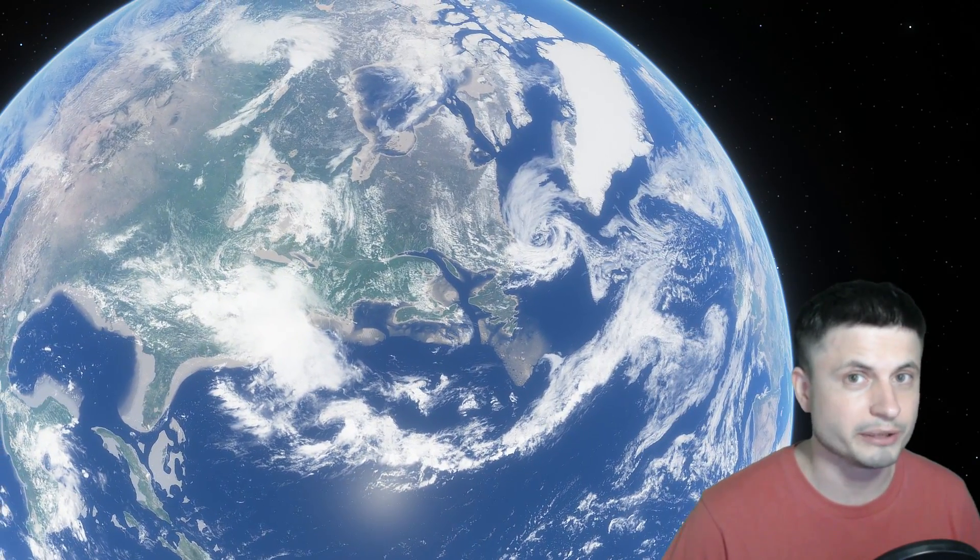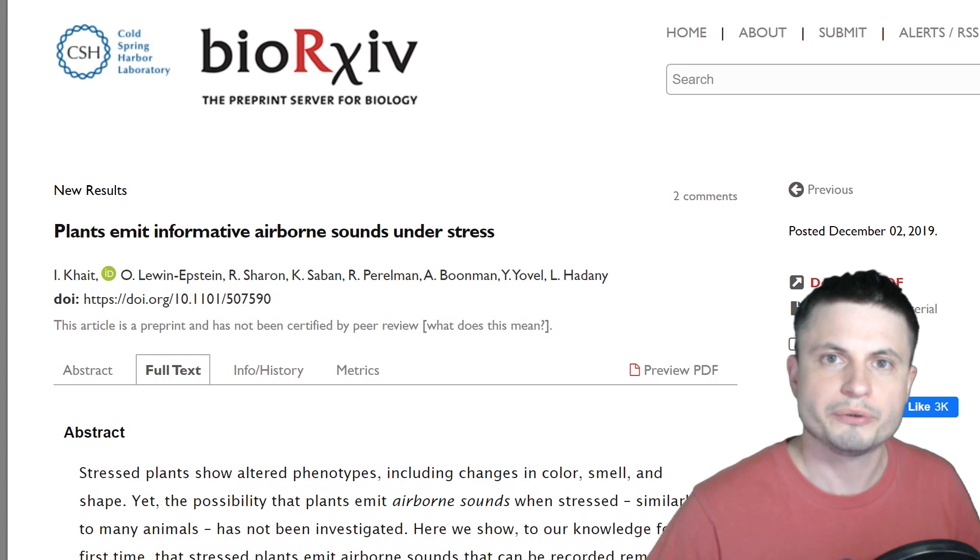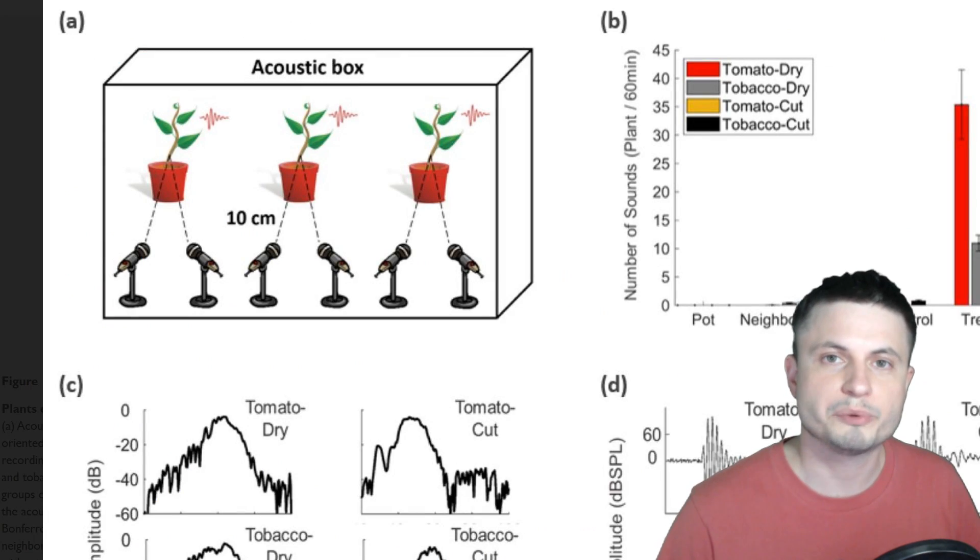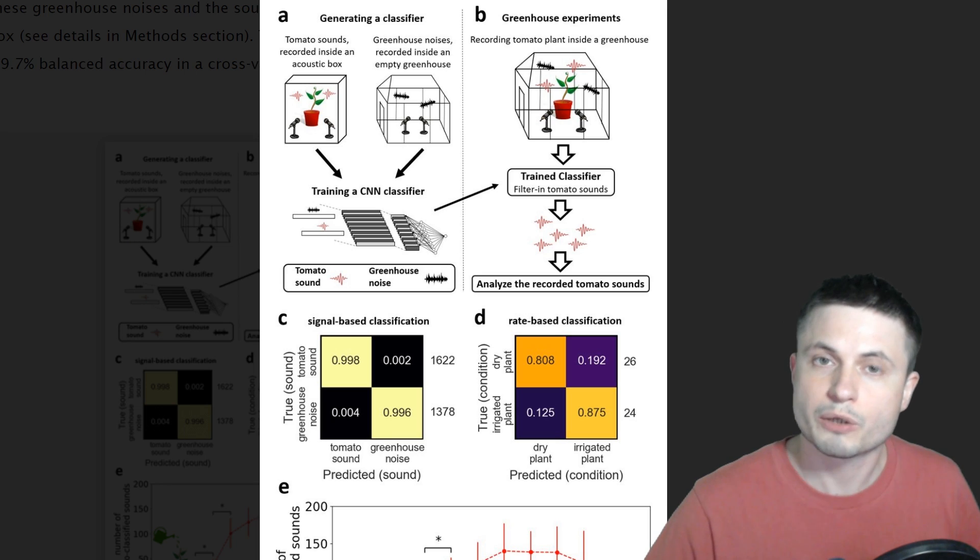Now you can probably already tell from the title what it's about, but let's actually discuss this in a little bit more detail. It's based on this paper right here that recently appeared in a magazine. It's research coming from Israel based on some really thorough analysis and more specifically auditory or sound analysis coming from various plants such as tobacco and tomato plants. It also involved some crazy setup and even machine learning algorithms that would then be used to try to predict various things.